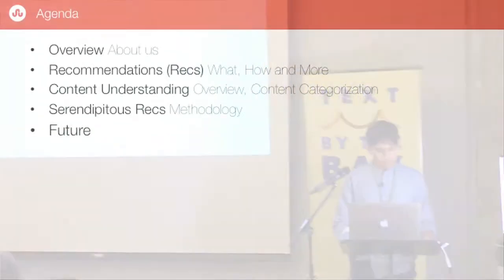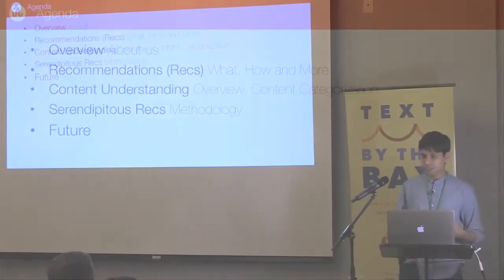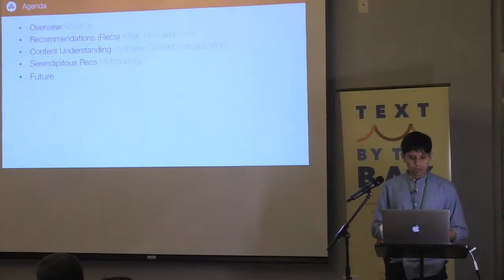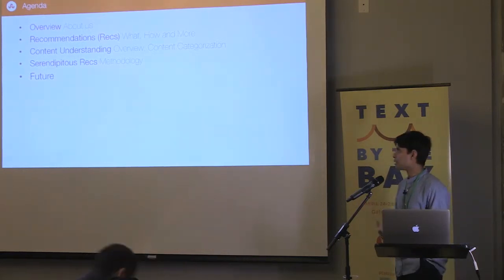In this talk, basically, we experimented with something. It was just a hack that we came up with. And I'm just going to talk about that. So the agenda is StumbleUpon is all about serendipity. It's about discovery. So how do you actually use content features to recommend serendipity? These are the topics I will be touching on.